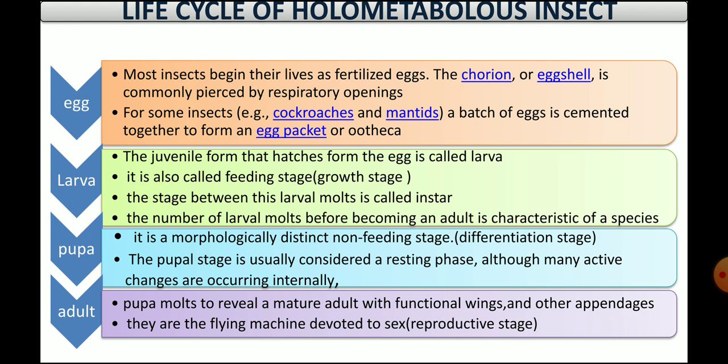Next is the larva, which is also called the feeding stage or the growth stage. Next is the pupa, which is the non-feeding stage and the differentiation stage, also known as the resting stage. The next stage is the adult, which is the reproductive stage — also known as the flying machine devoted to reproduction — as they have functional wings and other appendages and are fully mature for a reproductive life.